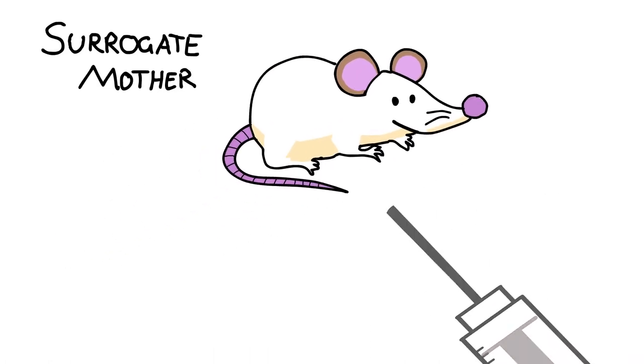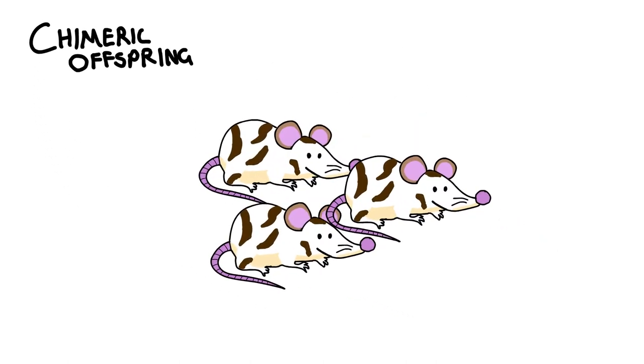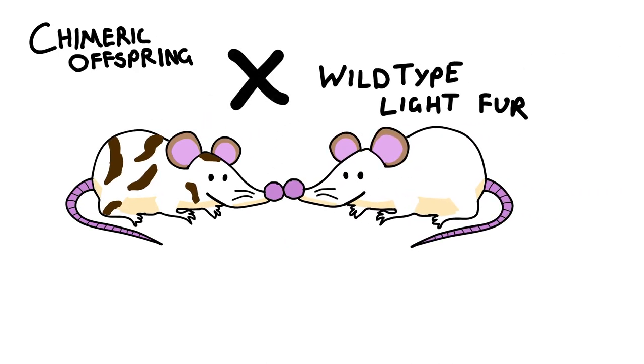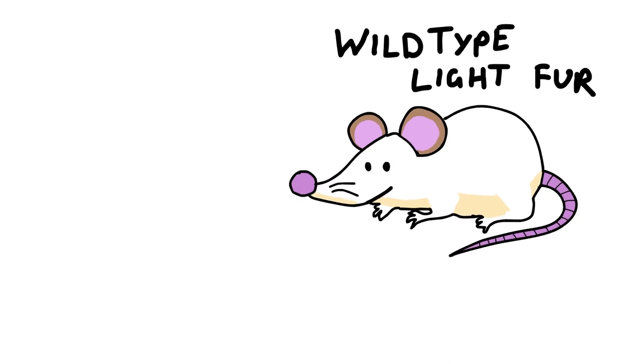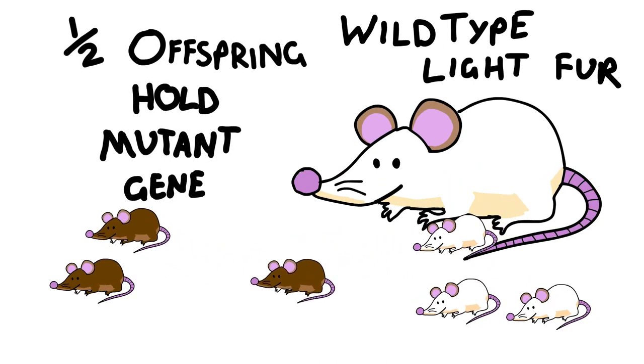She would carry to term and give birth to some chimeric individuals. These chimeric mice could then be bred with a wild-type mouse, and half of their offspring would be wild-type, while the other half would be homozygous for the target mutation. Because these chimeric mice are heterozygous for the mutant gene, it allows the maintenance of recessive lethal genetic lines that can be selected based on fur color.